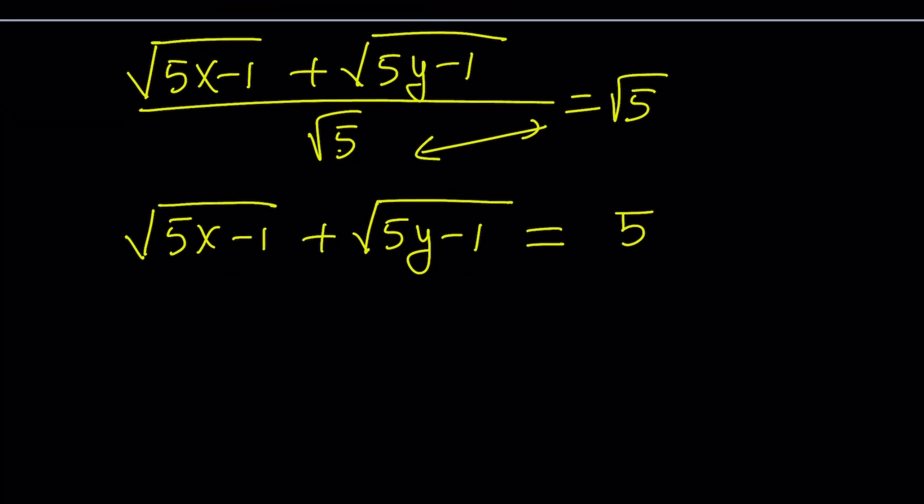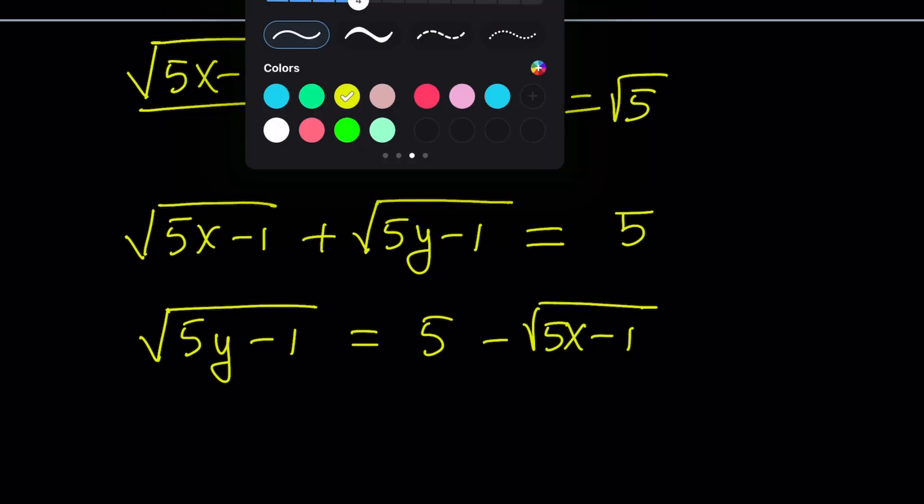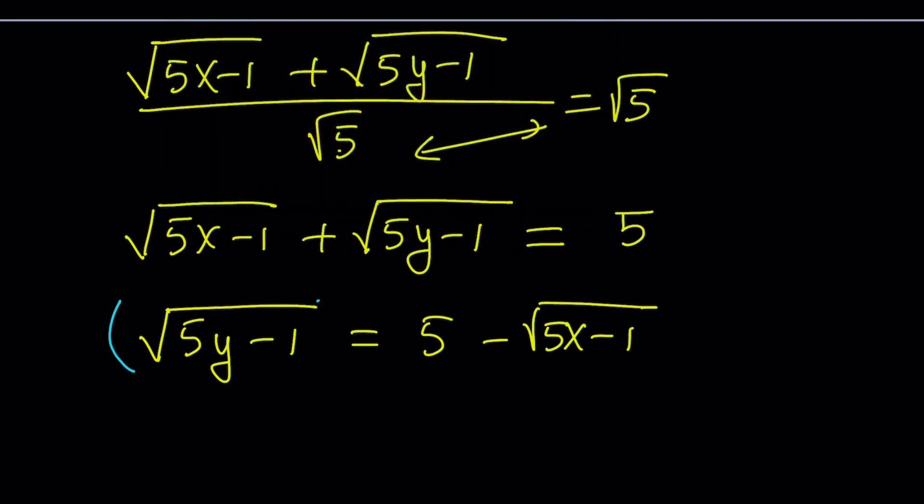So, here's what I'm going to do. I'm going to isolate one of these. So let's go ahead and just isolate the square root of 5y minus 1 and subtract the other one from 5. And what I'm going to be doing next is actually going to be very helpful. I'm going to square both sides. Obviously, at some point, you were probably expecting this, right? Squaring both sides is helpful if we're dealing with radicals.